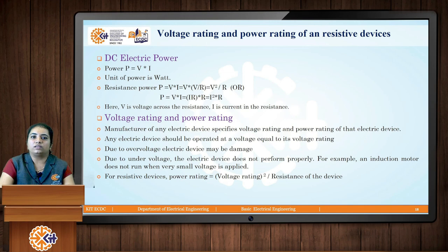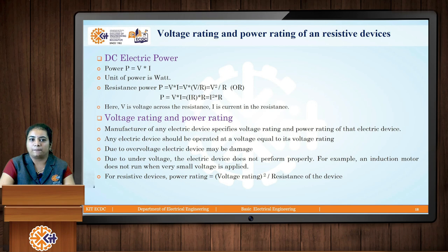We also need to consider the voltage rating and power rating of resistive devices. DC electric power is given as the product of total voltage and total current: P equals V times I, with the unit being watts. For a resistive circuit, we can substitute I as V over R to get P equals V squared over R, or substitute V as I times R to get P equals I squared times R.